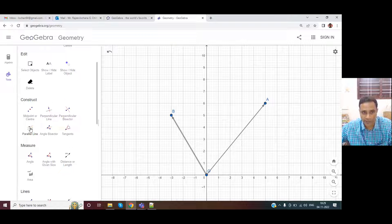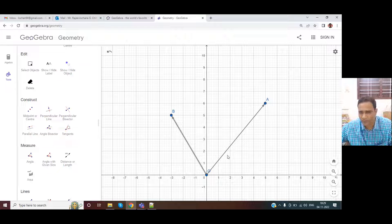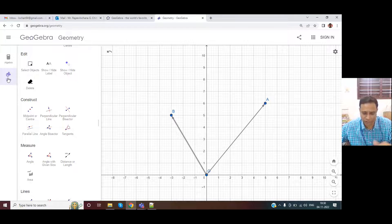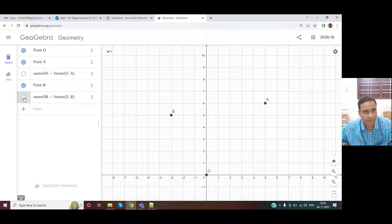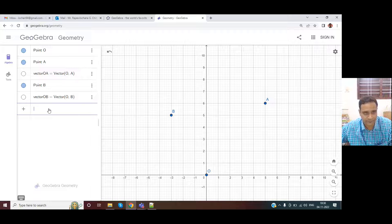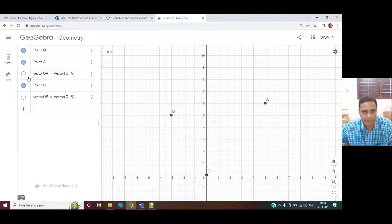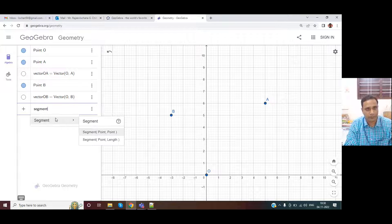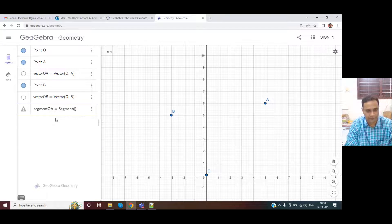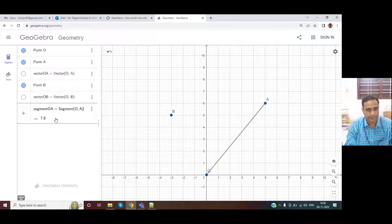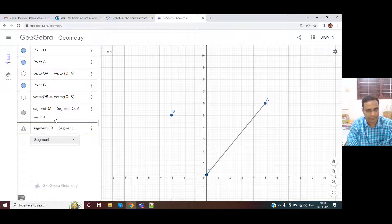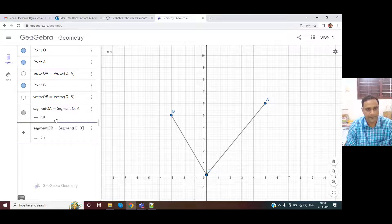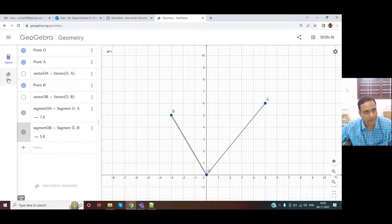However, so this parallel line does not work on the vectors. I mean, there is some geometric or mathematical interpretation there different. So instead, what we'll do is we'll try to hide these vectors for now and have segments for OA and OB. So let me have segment OA is segment between O and A. Similarly, segment OB is segment between O and B. So these two have been done.